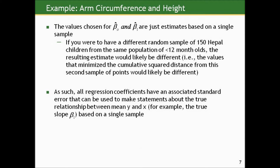These values chosen for the intercept and slope are just estimates based on a single sample. If we had a different random sample of 150 Nepali children from the same population, the resulting estimates would likely be different — the values minimizing the cumulative square distance from the second sample would likely differ slightly. This is sampling variability. The results we get vary depending on the sample we took. As such, all regression coefficients — the estimated slope and even the intercept — have an associated standard error.